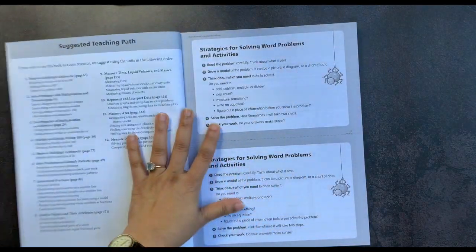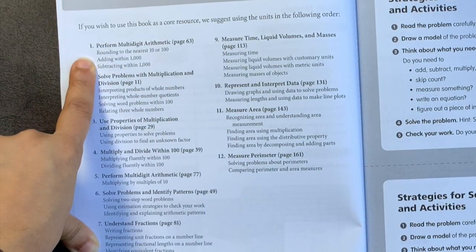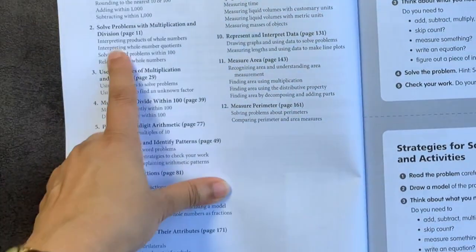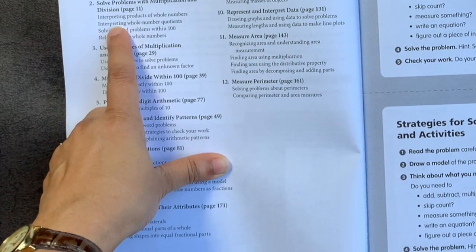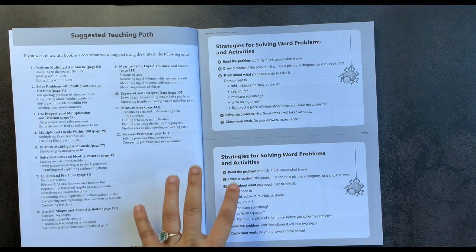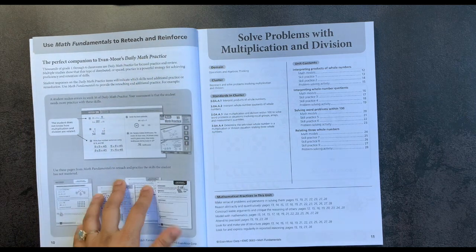When you look at the suggested teaching path, you'll notice that they suggest starting with multi-digit arithmetic which starts on page 63 of this book, and then going backwards to the first section solving problems with multiplication and division and so on and so forth, kind of jumping from one area to the next. The other way of using this book is as a companion to your standard core curriculum or as a companion to Daily Math Practice.